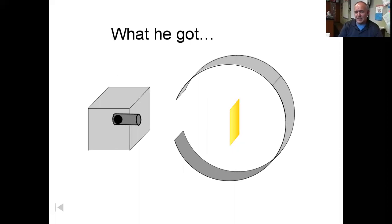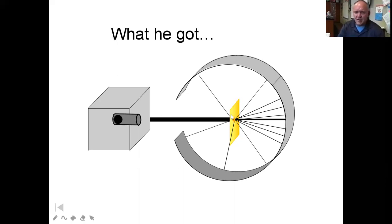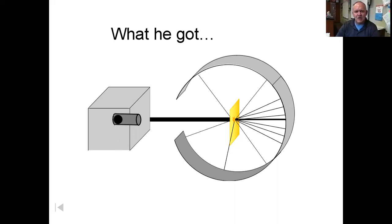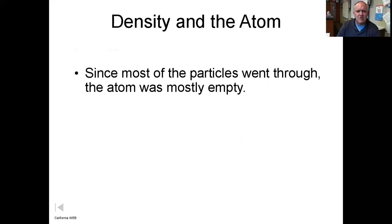But in fact, they saw weird stuff. When you shoot a shotgun at a piece of tissue paper, you do not expect the bullet to deflect, and you certainly wouldn't expect it to come back at you. That didn't make any sense at all. This told them that the way they were thinking about the atom was completely wrong.